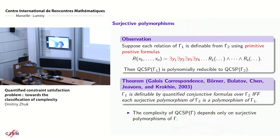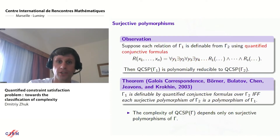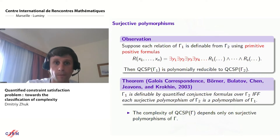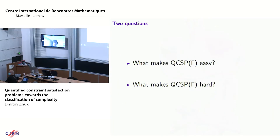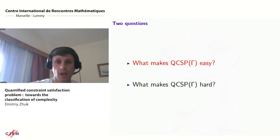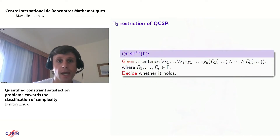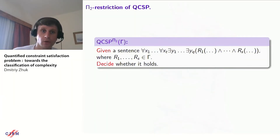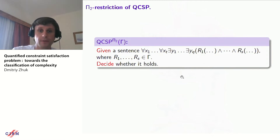We say that formulas using only existential quantifiers are called primitive positive formulas. Now let's discuss two questions: what makes QCSP easy and what makes QCSP hard? To answer this, I want to show you the main reduction that allows reducing complexity from P-space-hard to something easy like P or NP. To explain this reduction, consider the pi-2 restriction of QCSP, where first we have universal quantifiers and then existential quantifiers. If we need to solve this problem, we check: for all evaluations of the X variables, does there exist a solution to the corresponding CSP?